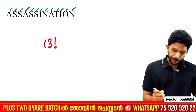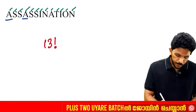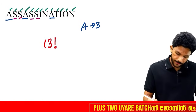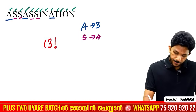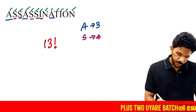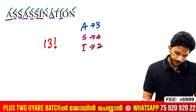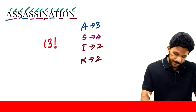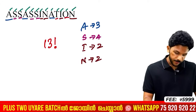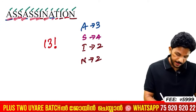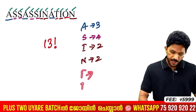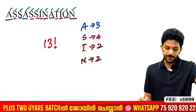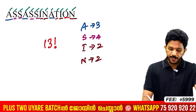In ASSASSINATION, we have repetitions: A appears 3 times, S appears 4 times, I appears 2 times, N appears 2 times. T and O each appear once. So there are multiple repeated letters: 3 A's, 4 S's, and 2 N's.